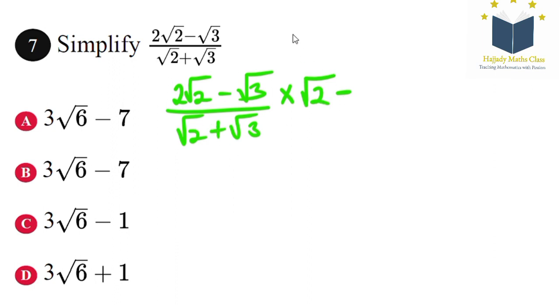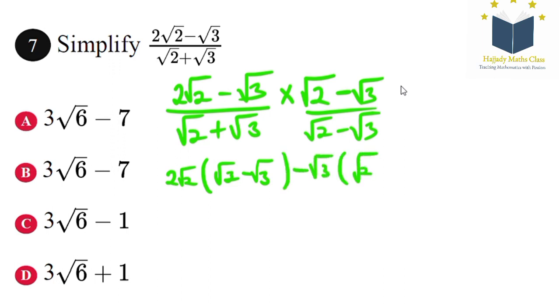So we have √2 minus √3. Multiplying through, we use this to multiply the whole numerator and denominator. Let me break it down. We have 2√2 in bracket (√2 minus √3) minus √3 in bracket (√2 minus √3), divided by √2 into bracket (√2 minus √3).